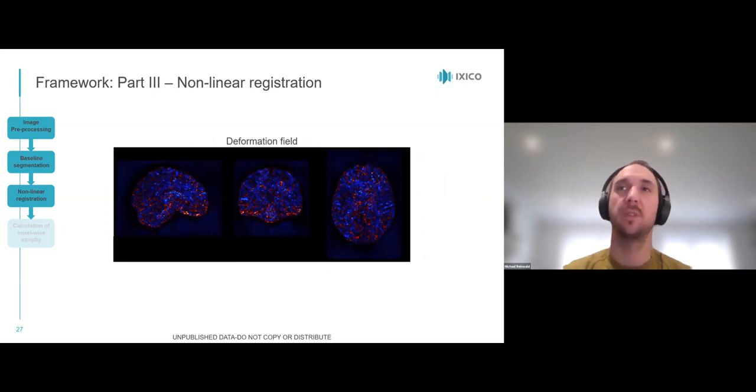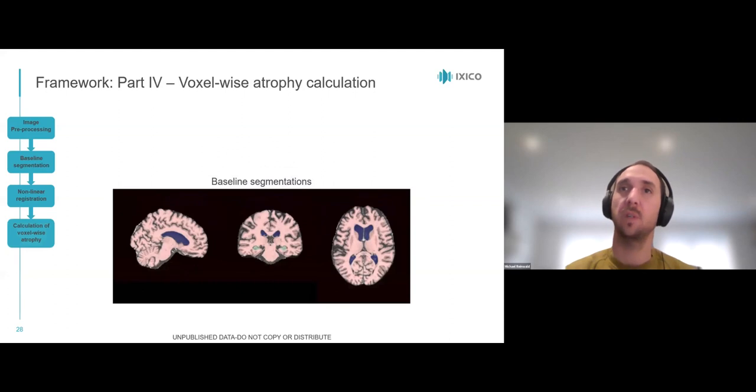This warping can be represented as the deformation field, which our framework co-generates. It describes how every pixel or voxel is warped and can be applied onto any segmentation in baseline space. For example, let's use the three previously presented segmentations: whole-brain, ventricles, and hippocampus, from our range of AI algorithms.